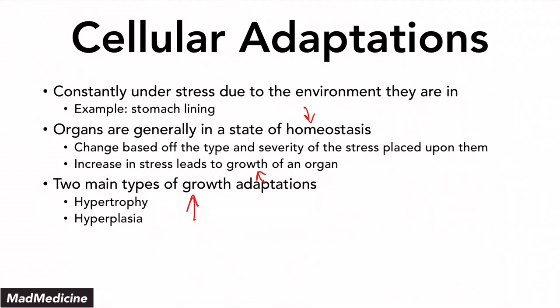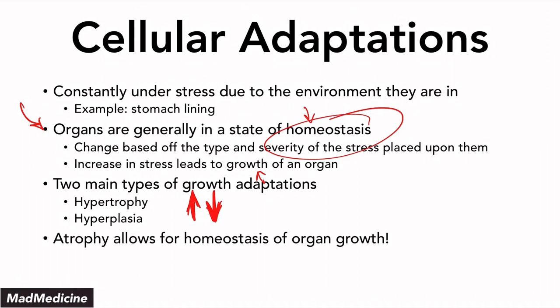Let's say an organ goes through a stressful event and eventually grows, and then the stress goes away. We said organs are generally in a state of homeostasis, so when the stress is relieved, the organ doesn't stay large. It decreases its size through atrophy. Atrophy allows for the homeostasis of an organ, especially during organ growth.